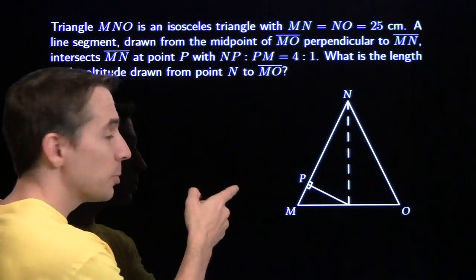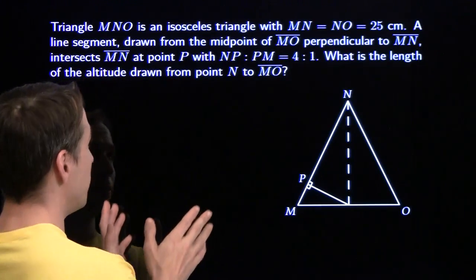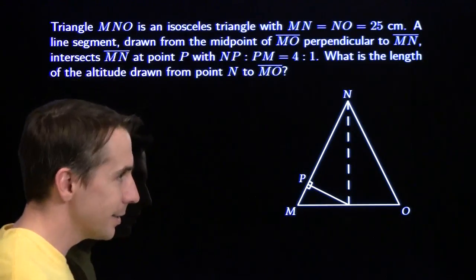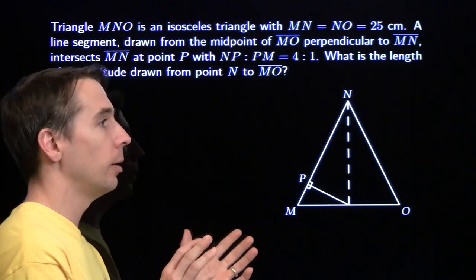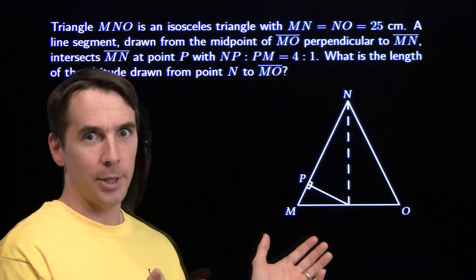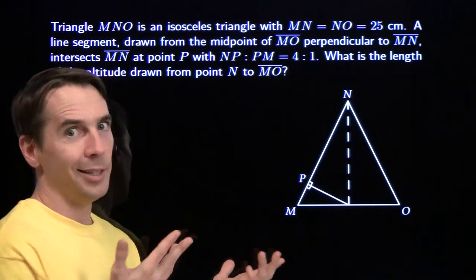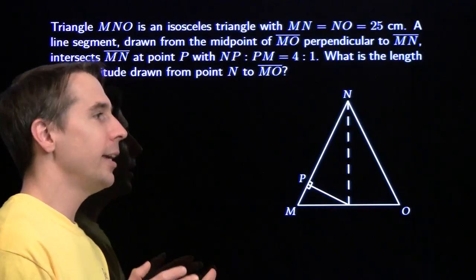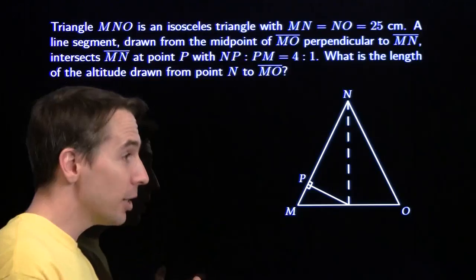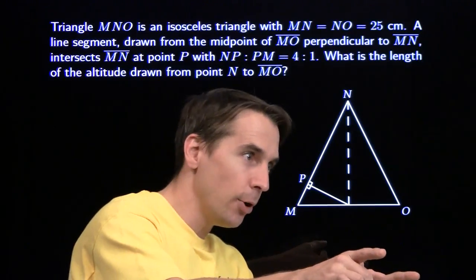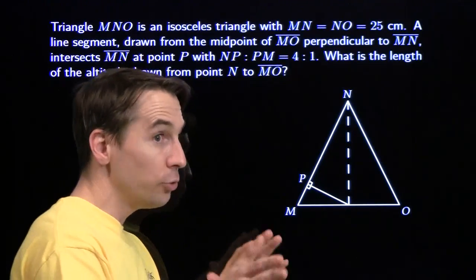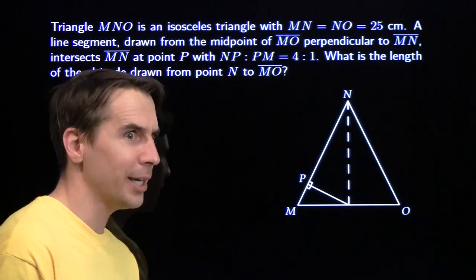We've got something special going on right here too — some geometry. This is my friend Harvey. He's really good at geometry because he can see things that aren't there. He taught me everything I know about geometry. And because you taught me so well, you can go stand over there because I got this. You can tell me if I make any mistakes.